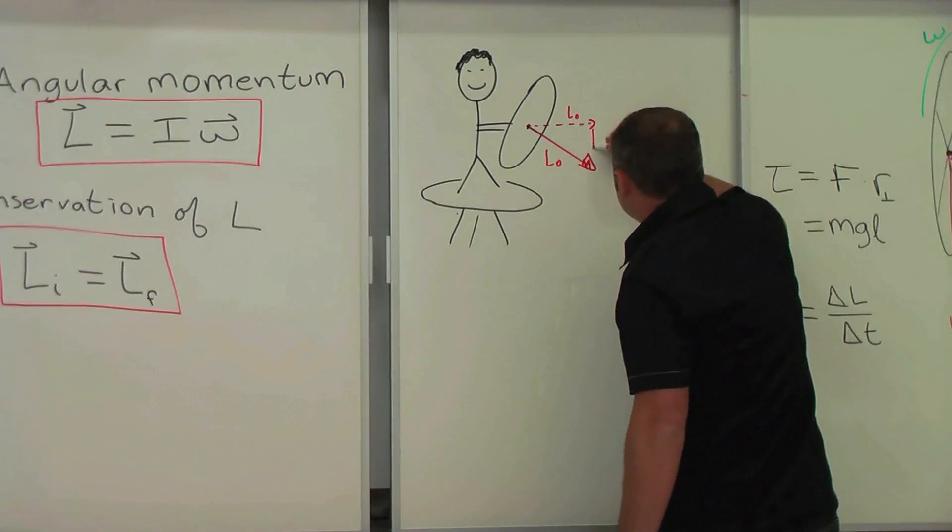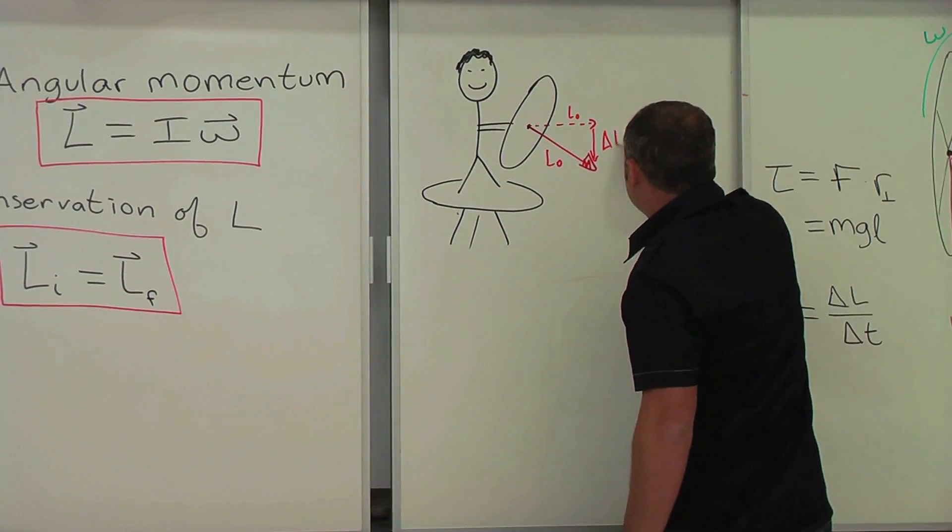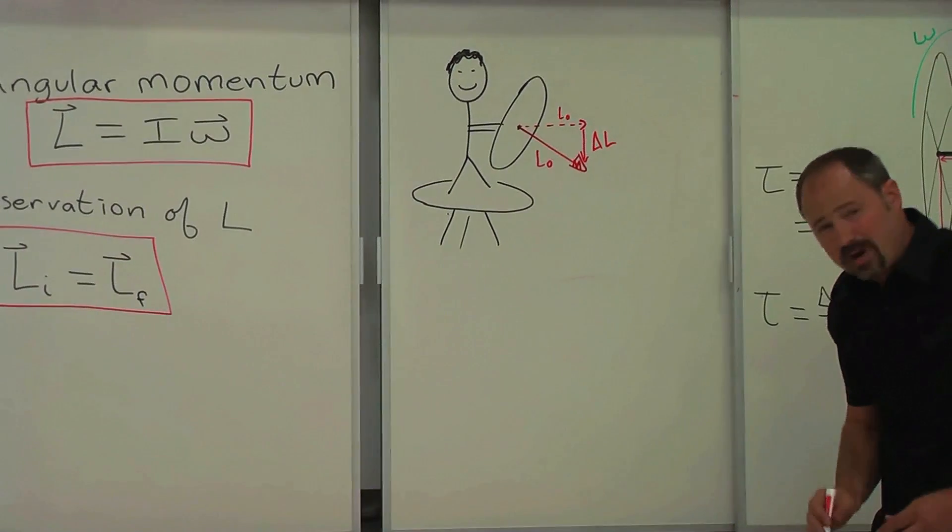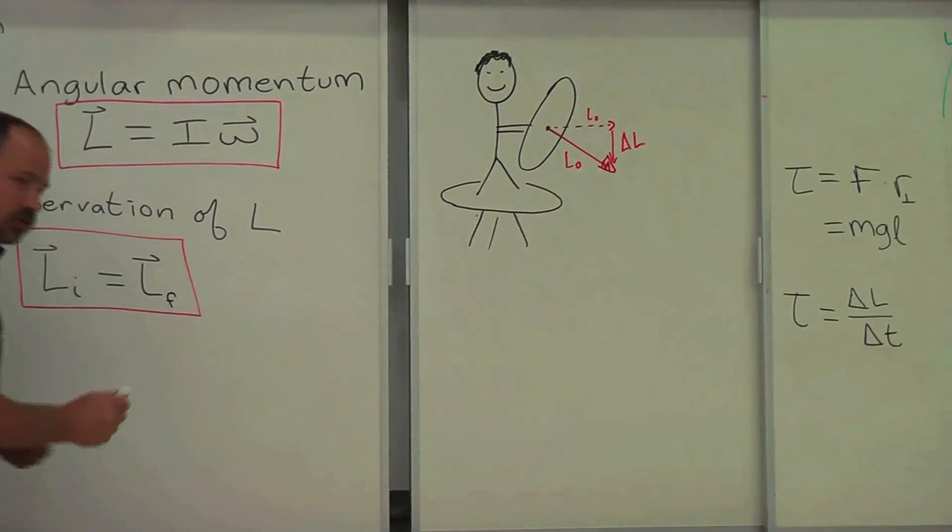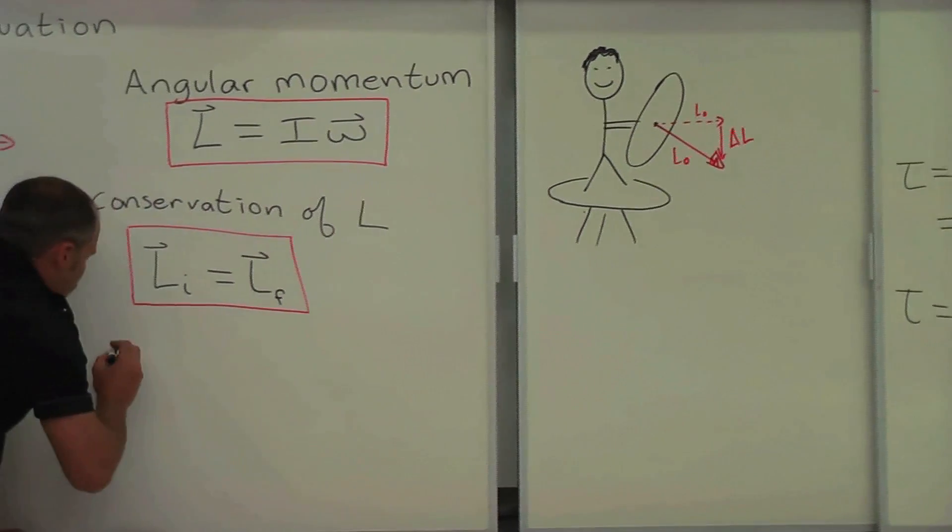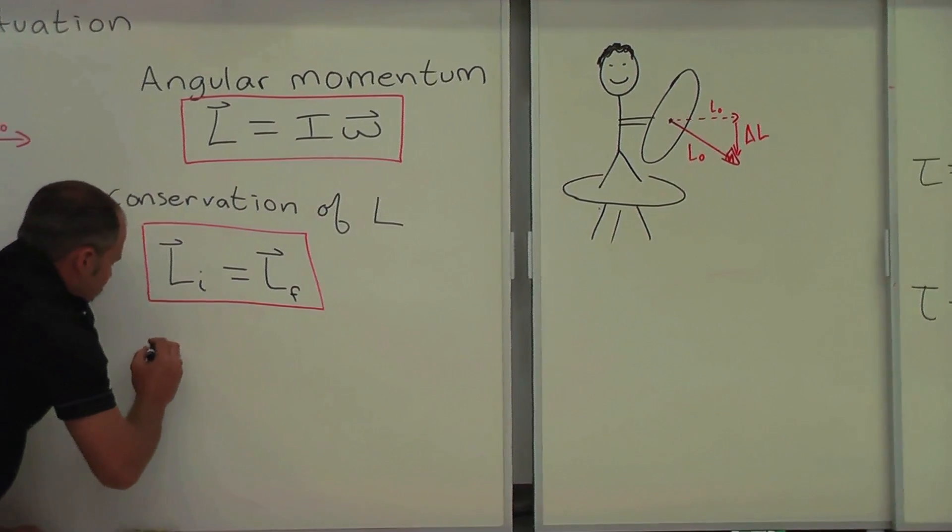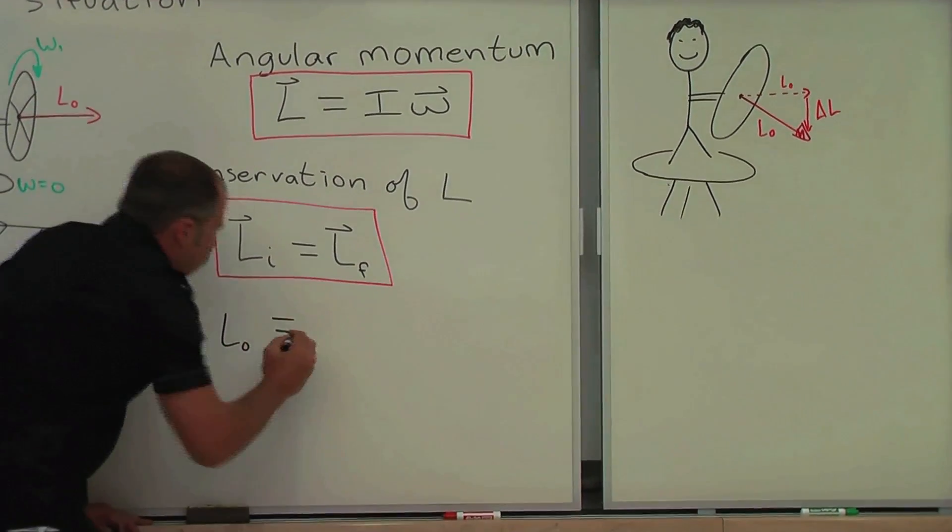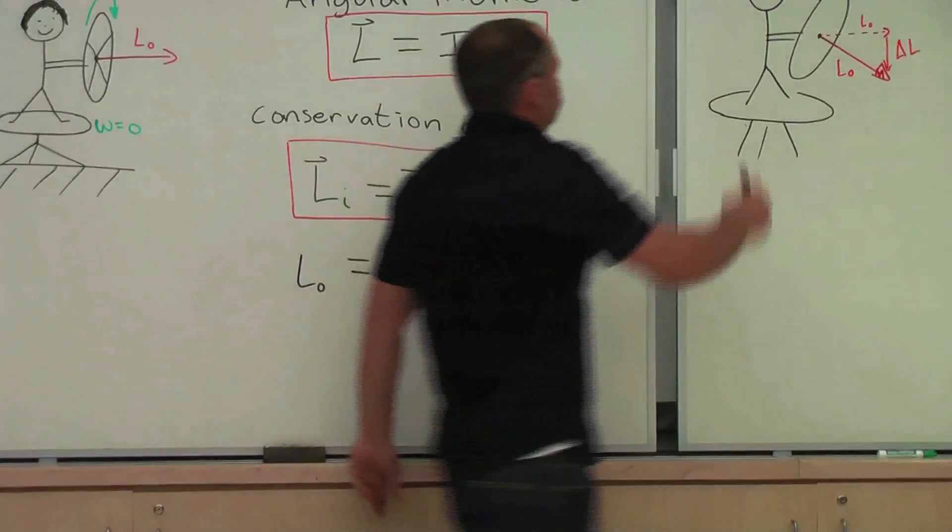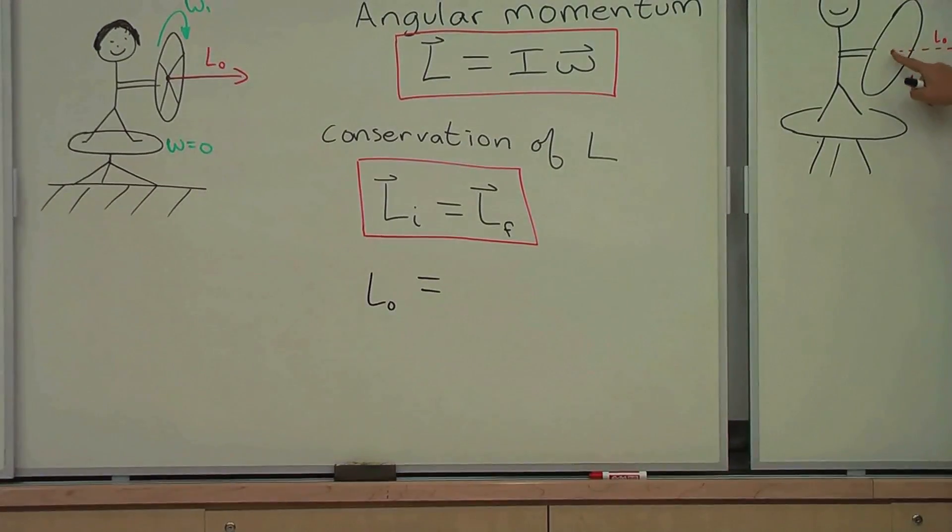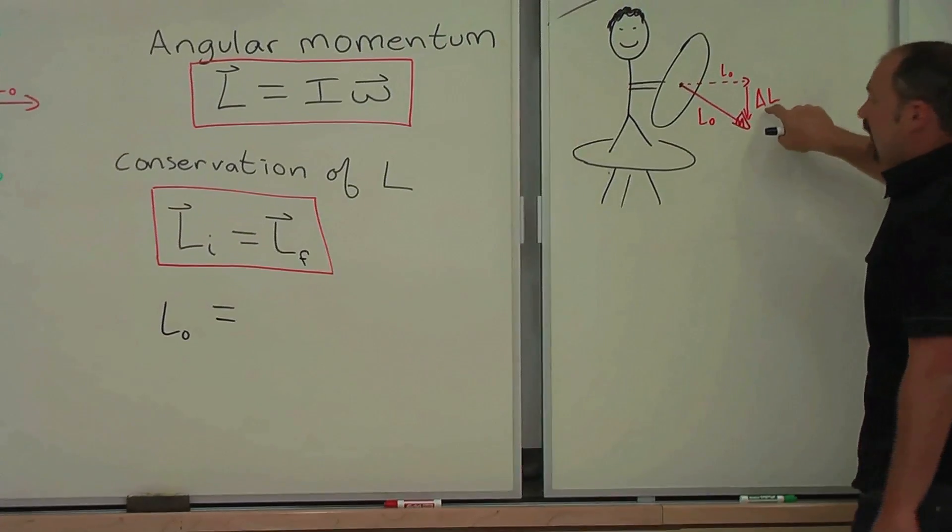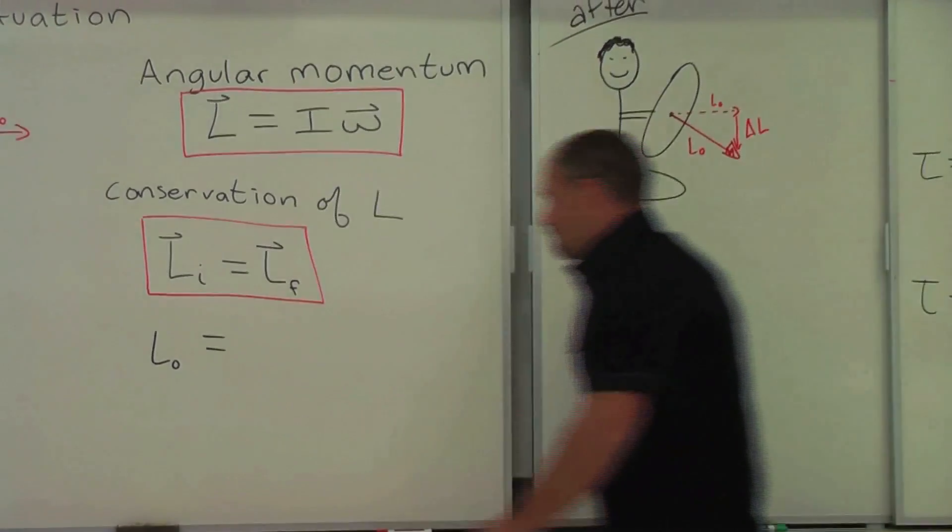So you can see that we've had a change in angular momentum in the downward direction. Now, if we go to our conservation of angular momentum, in the initial momentum we have L naught. That equals, well, what is the momentum in the final situation? So this is after, right? Well, we have an L naught and we have a negative delta L.